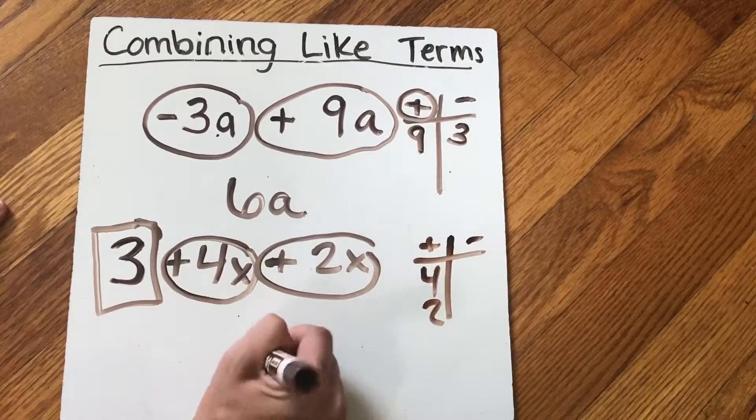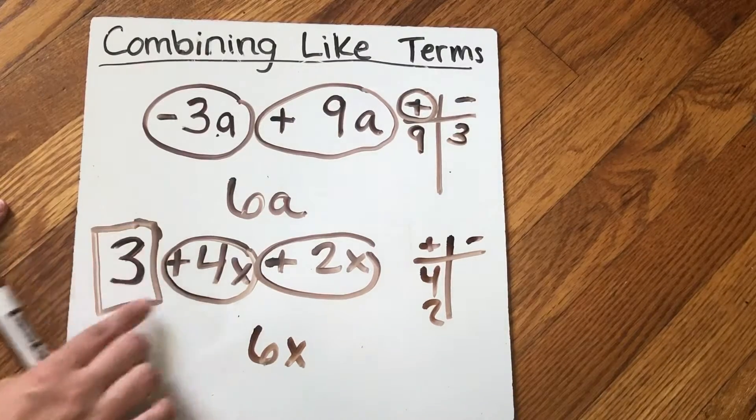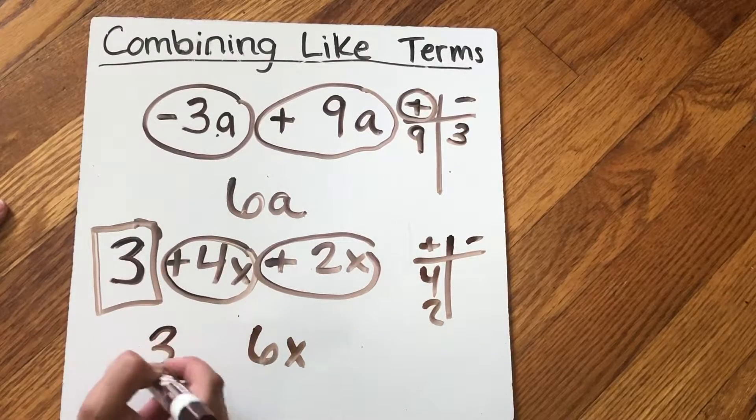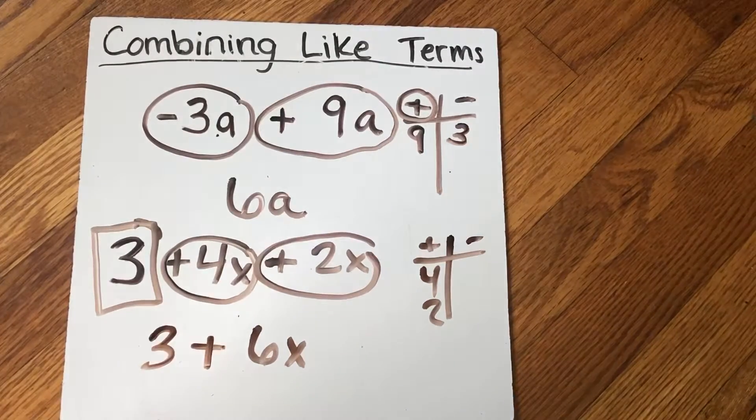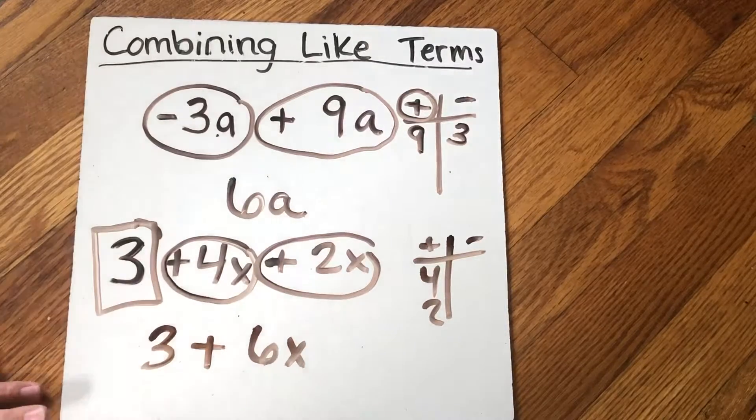But I could also do my t-chart over here and have 4 and 2. So they have all 6 of those points. So I have 6x. And I'm not done there. I need to add on my 3 because this 3 is by itself. It had nothing I needed to combine it with. So I have 3 + 6x. And that is my final answer for that one.